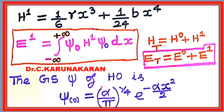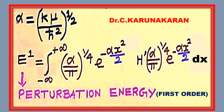The ground state wave function of the simple harmonic oscillator is given by ψ₀ = (α/π)^(1/4) · e^(−αx²/2), where α = k·μ/ℏ², k is the force constant, μ is the reduced mass, and ℏ = h/2π.